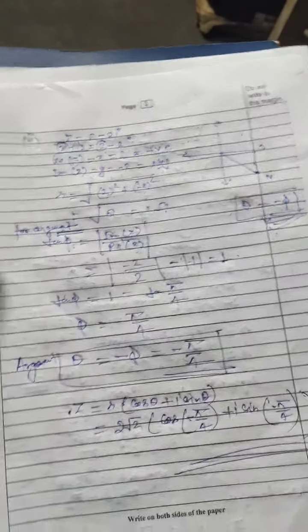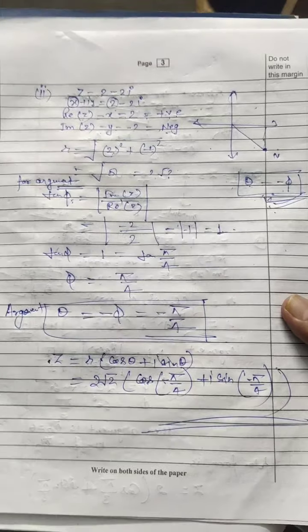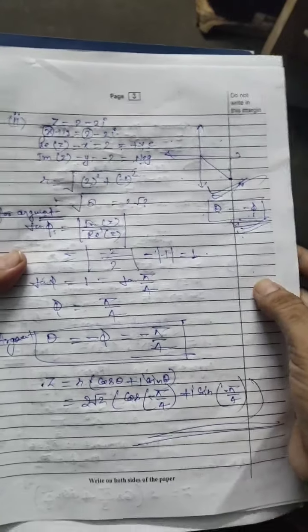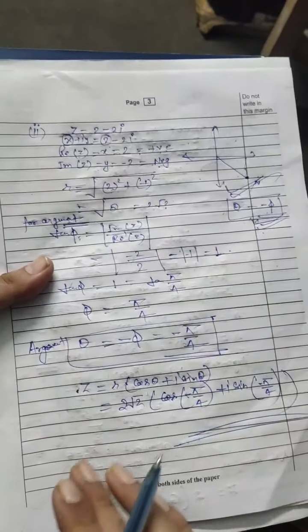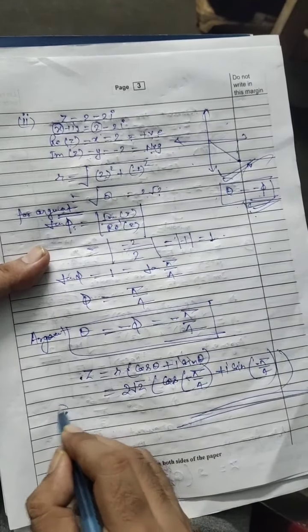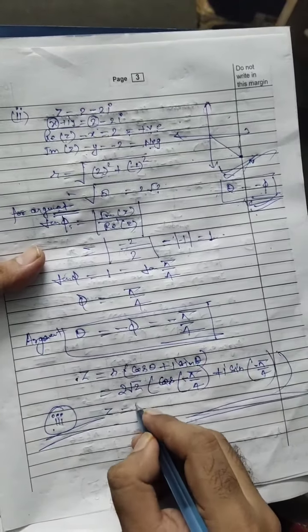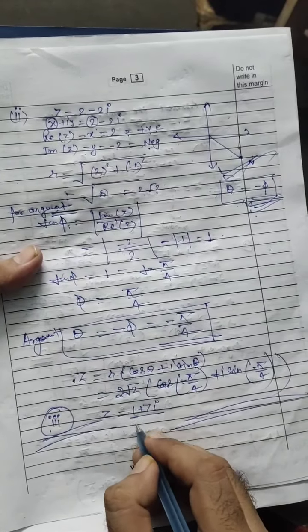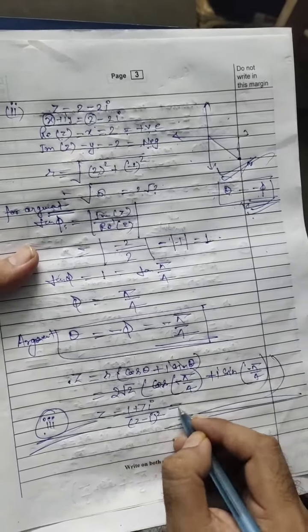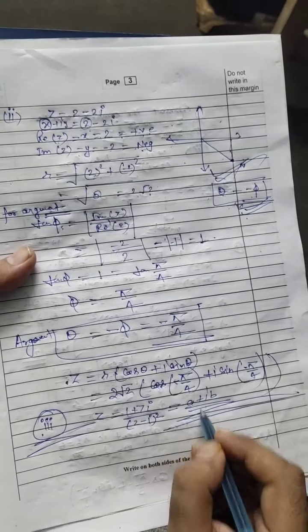The second part is clear. The main thing is: we need to identify in which quadrant the complex number is lying. Now the third part is your homework. Third part: z = (1 + 7i) / (2 − i)². Convert it to polar form. Hint: first convert it to the form a + ib, then find the polar form.